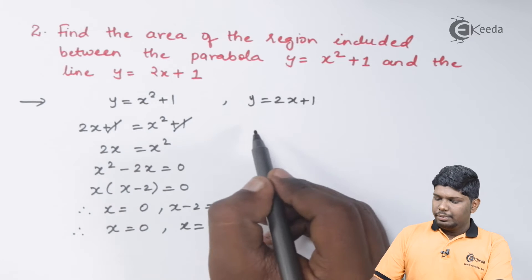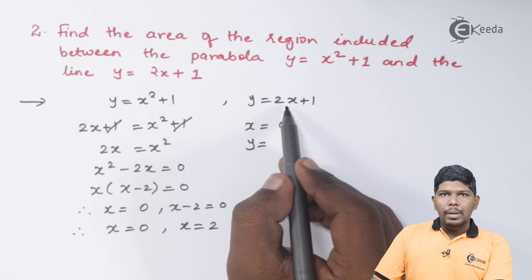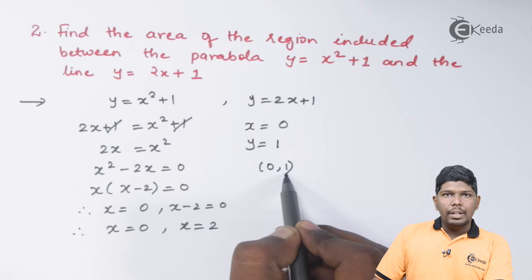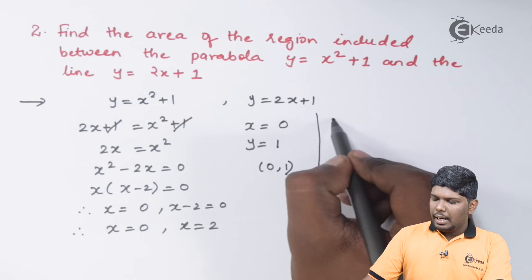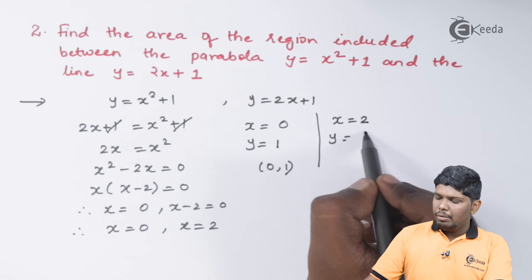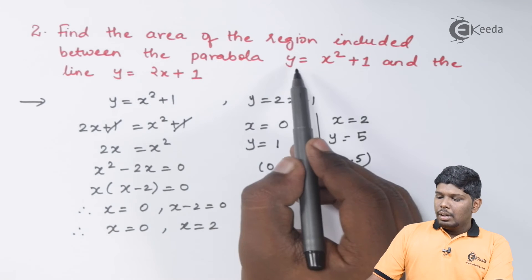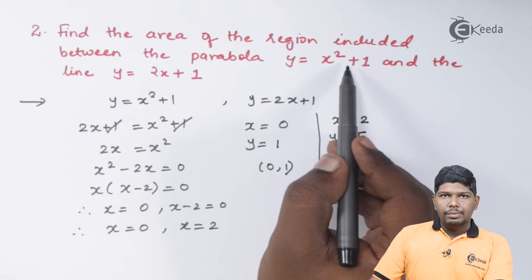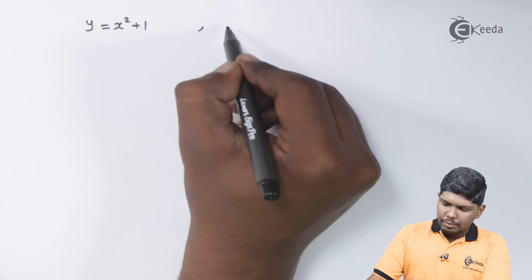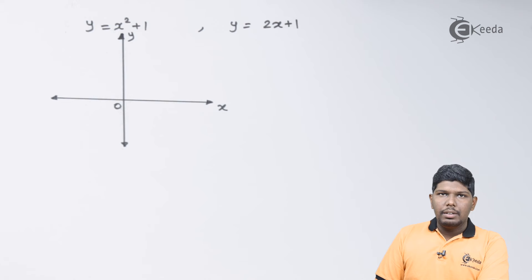Using y equals 2x plus 1: when x equals 0, y equals 2(0) plus 1 equals 1, giving the first point (0, 1). When x equals 2, y equals 2(2) plus 1 equals 5, giving the second point (2, 5). The origin of the parabola y equals x squared plus 1 lies at the point (0, 1).